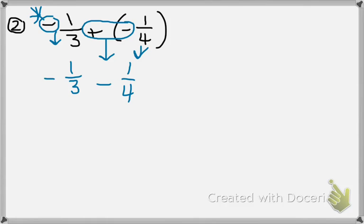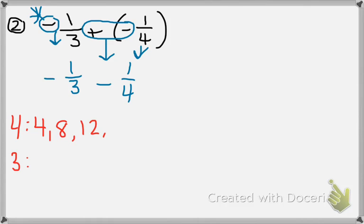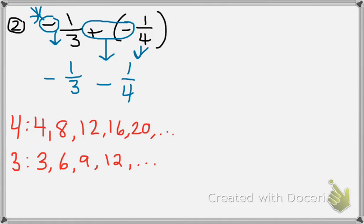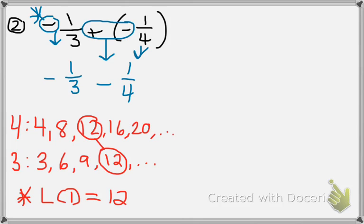Now it's easier to look at. Do they have the same denominator? They don't — they need to. So we need to list the multiples of the denominators, which are 3 and 4, and find the least common denominator. Starting with our larger number, 4, then 3: multiples of 4 are 4, 8, 12, 16, 20... Multiples of 3: 3, 6, 9, 12. Both 3 and 4 have a common multiple of 12. So the least common denominator is 12, meaning both fractions need a denominator of 12.